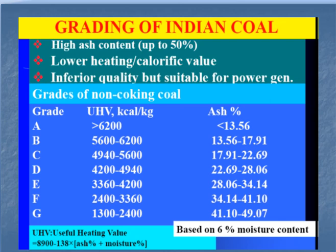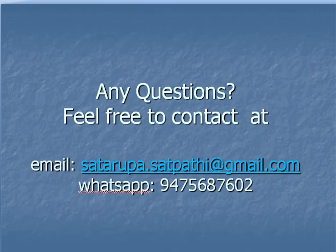Non-coking coal has less than 80% carbon, with higher ash content, lower calorific value, and is suitable for power generation. Grades D, E, F, and G are typically available for the power industry, since anything that burns can be used there. High-grade coals go exclusively to manufacturing industries, while poorer grades are used in thermal power plants. Thank you so much — for any questions, please feel free to contact via the provided email and WhatsApp number.